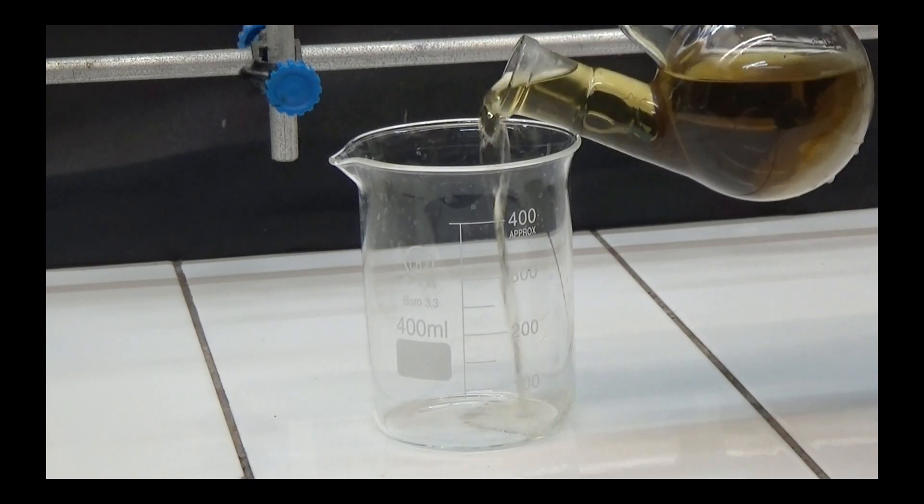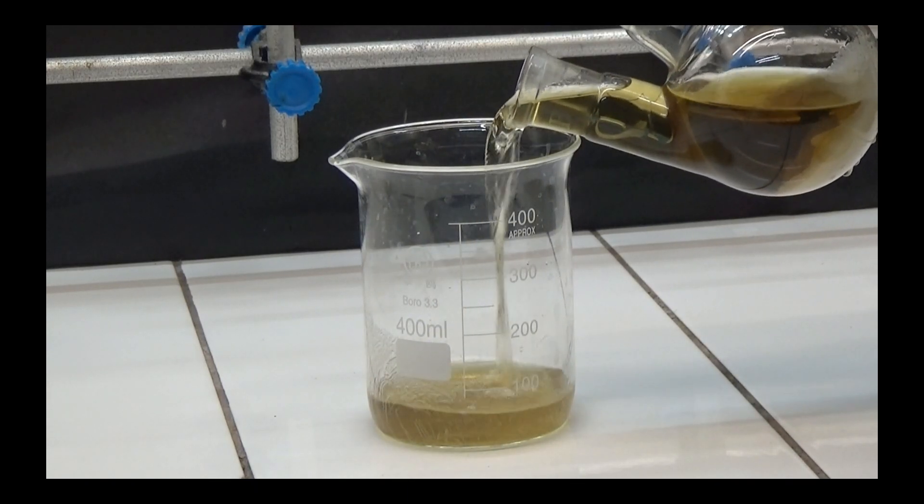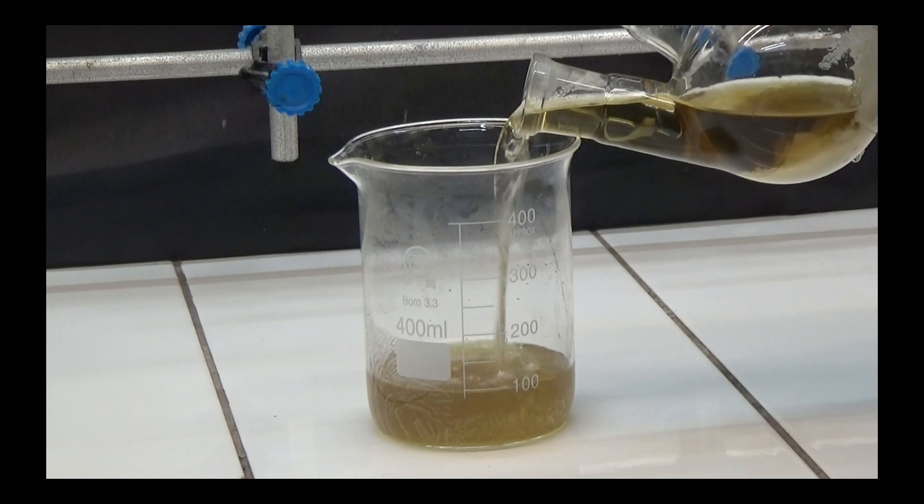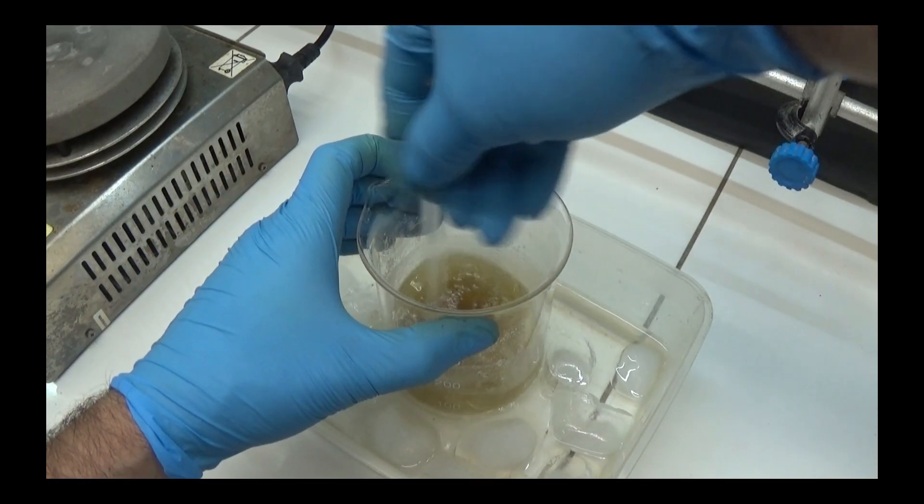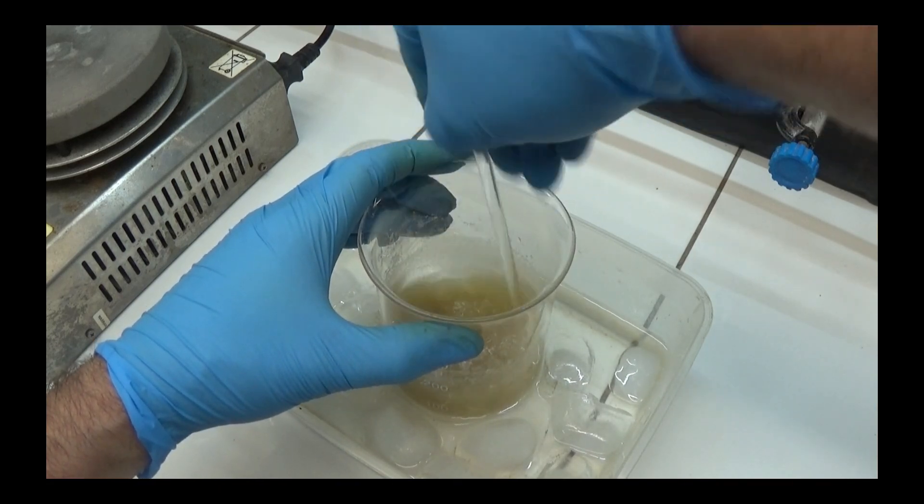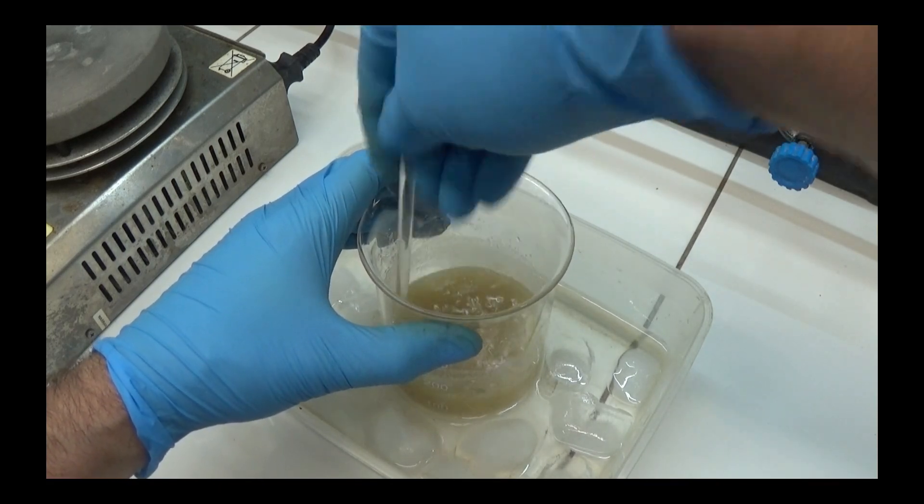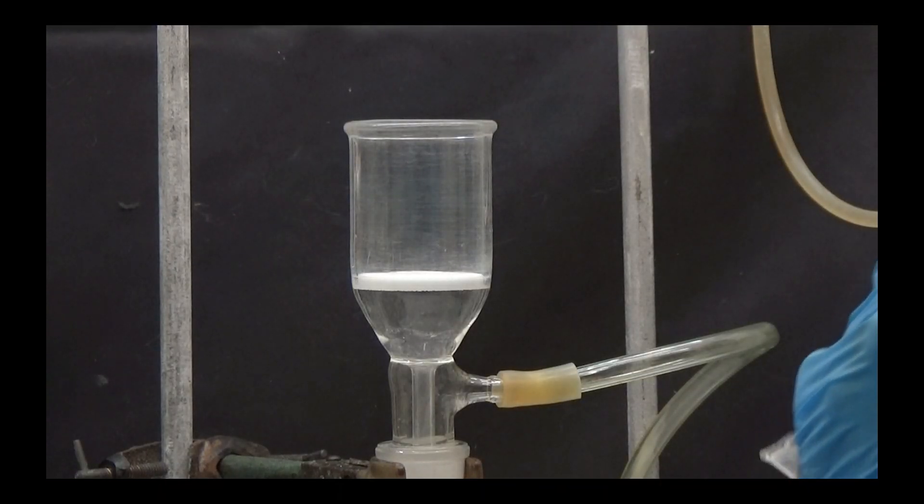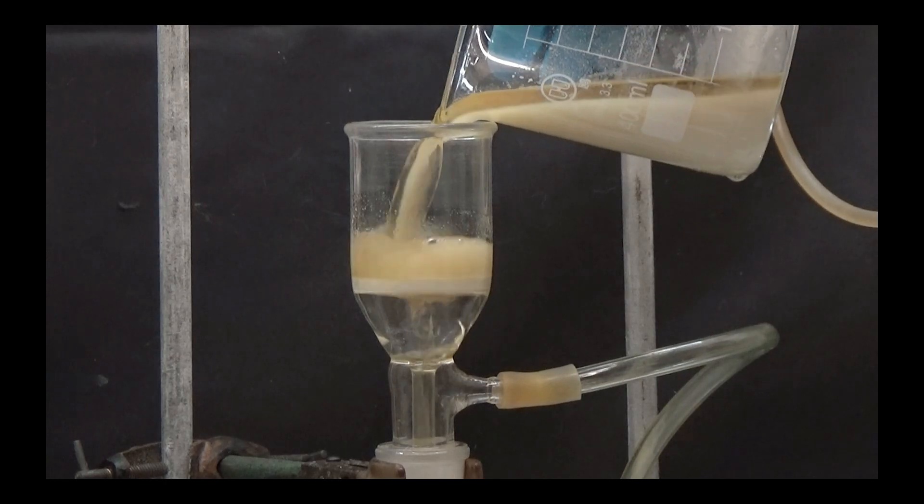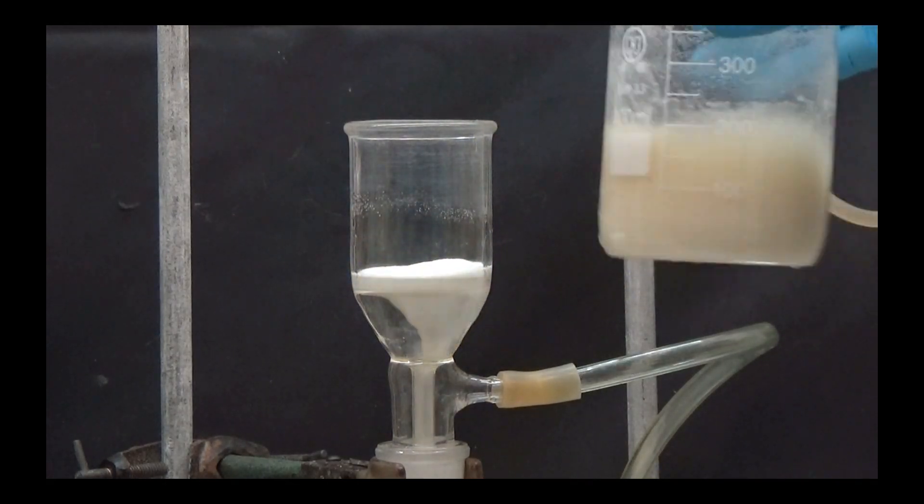Pour the hot content into a beaker and cool it with an ice water bath to promote crystallization. To accelerate crystallization, we scrape the walls of the beaker with a glass rod. Collect the crystallized succinamide by suction and wash it with 30ml of cold acetone.